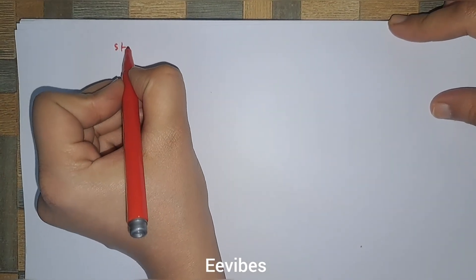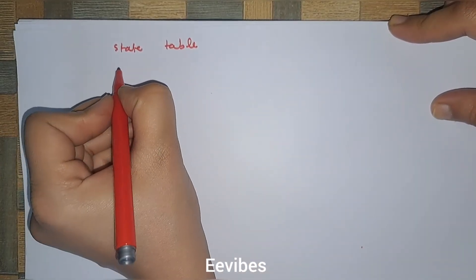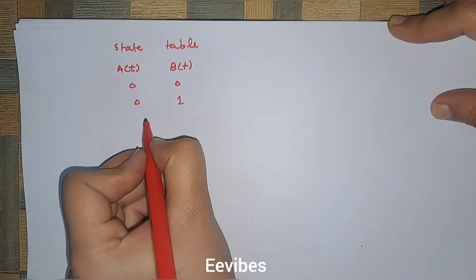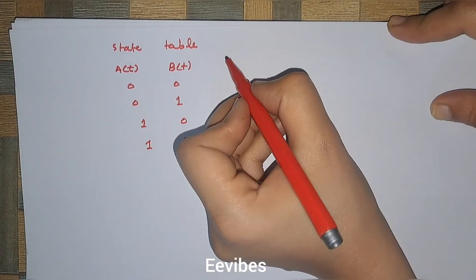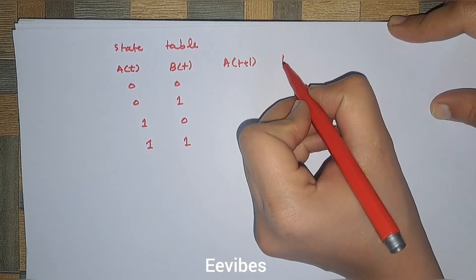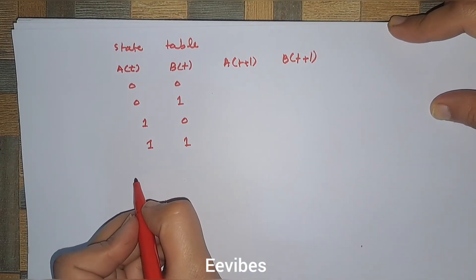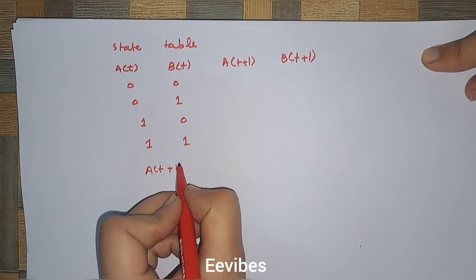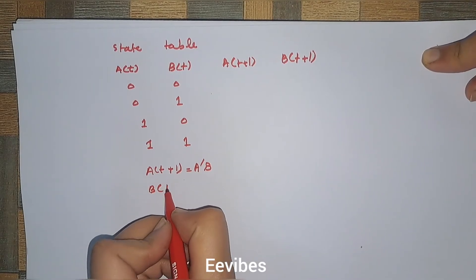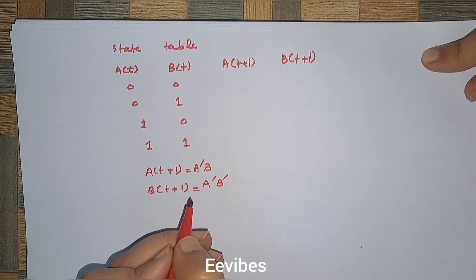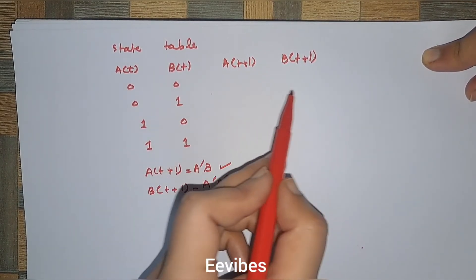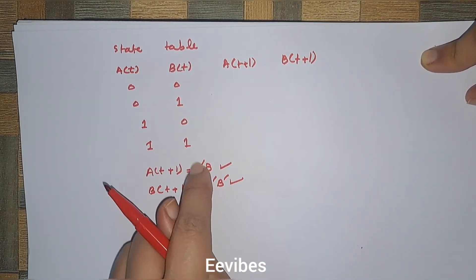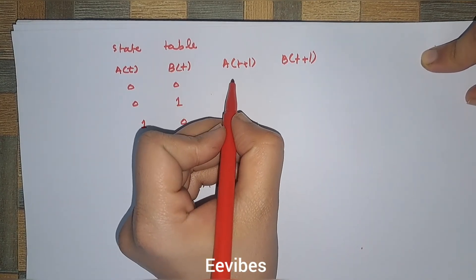Here I will draw the state table. We have two present states marked as A(t) and B(t), which can be 00, 01, 10, and 11. Similarly the next states are A(t+1) and B(t+1). Using the derived formulas — A(t+1) = A'B and B(t+1) = A'B' — I will fill the columns. When A=0 and B=0: A' = 1 but B = 0, so A(t+1) = 0.